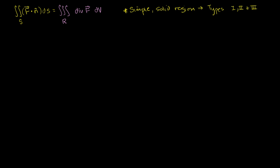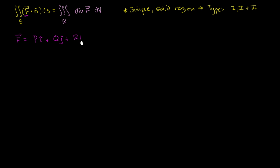Let's assume that our vector field f can be written as p(x, y, z) times i, plus q(x, y, z) times j, plus r(x, y, z) times k. So let's think about what each side of the equation would come out to be.